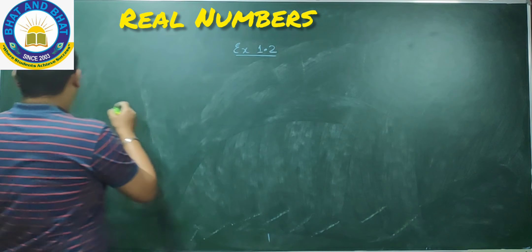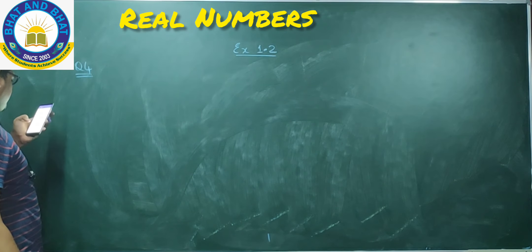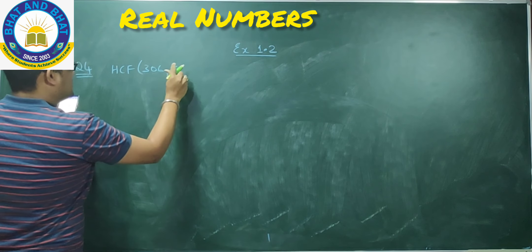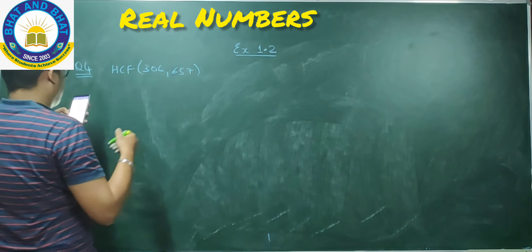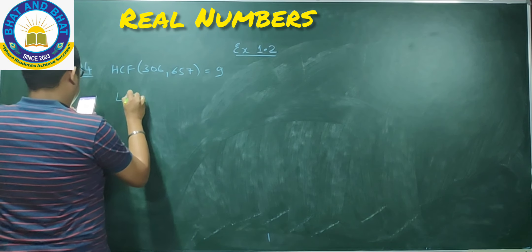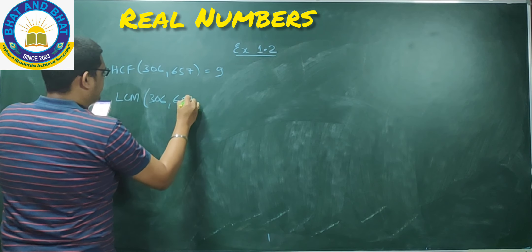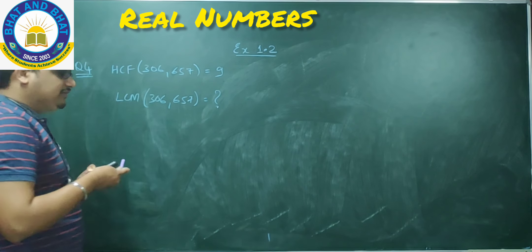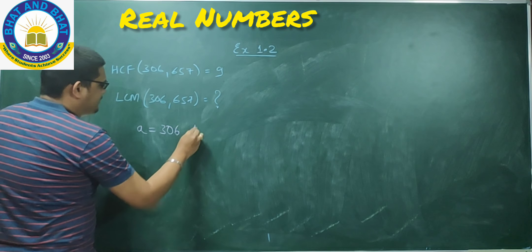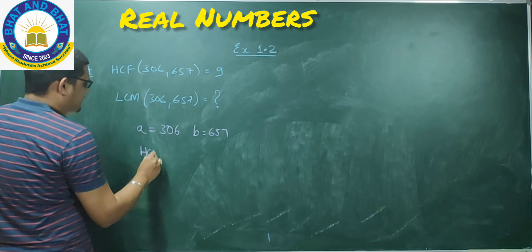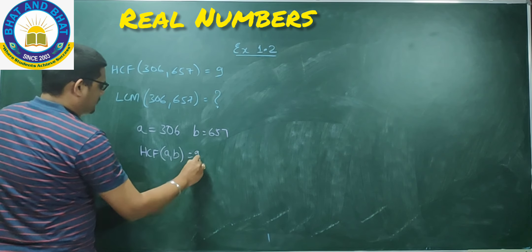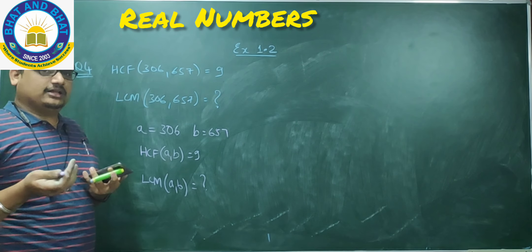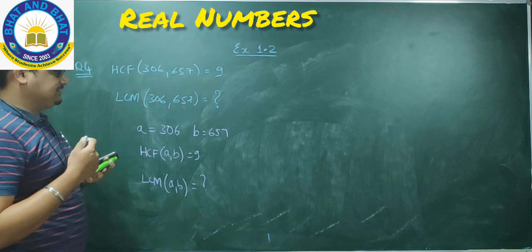Now let me do question number 4. It says: given that HCF of 306 and 657 is equal to 9, find the LCM of 306 and 657. So A = 306, B = 657, and HCF is given as 9. I need to find LCM, using the formula: LCM of (A, B) into HCF of (A, B) is equal to A into B.